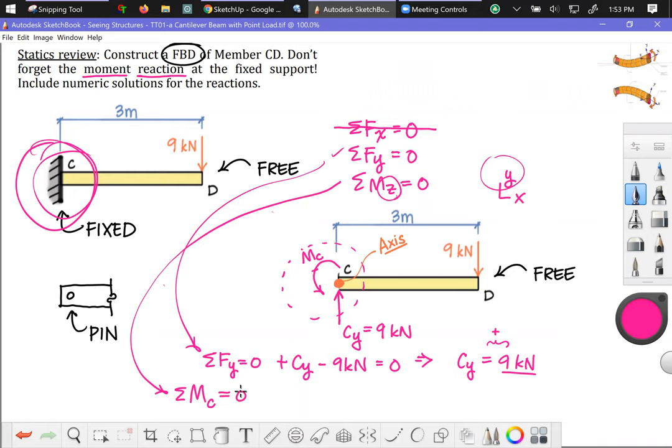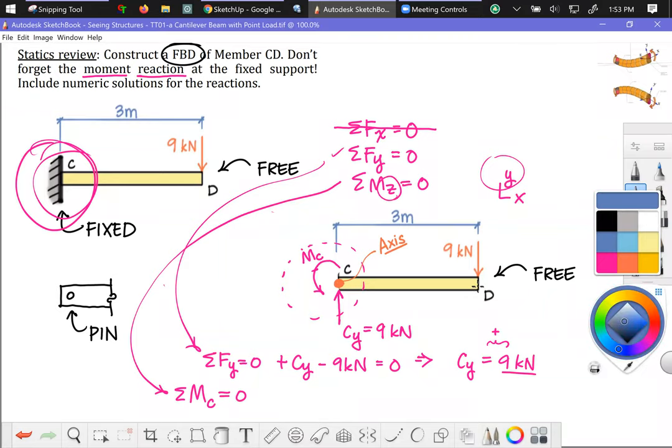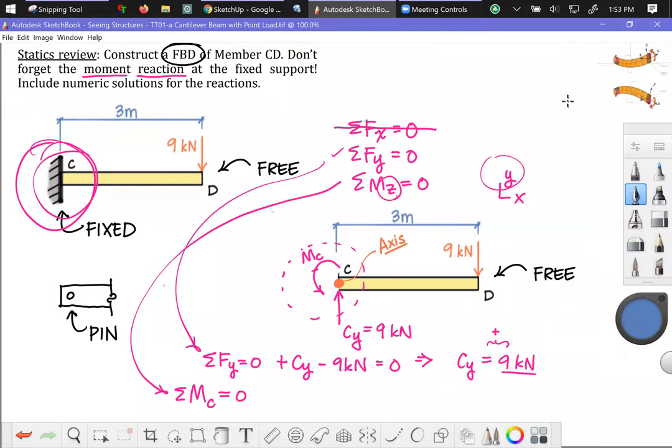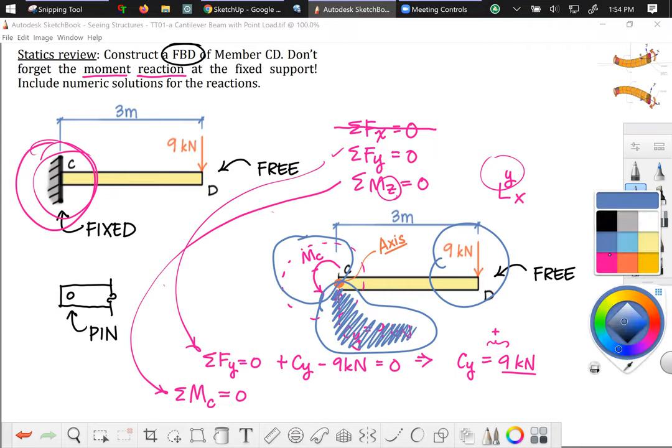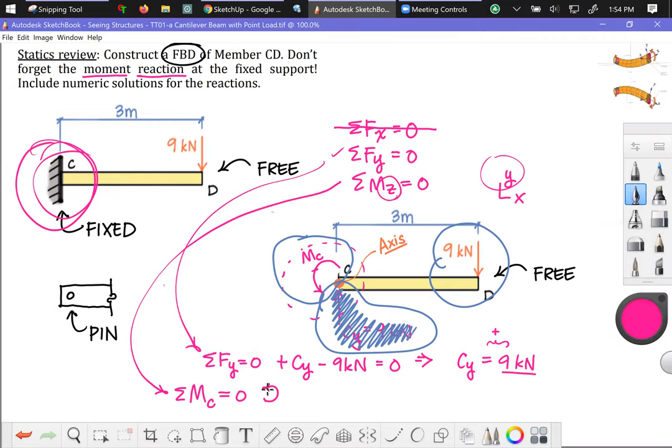And how many terms am I going to have in this? Well, I have got three things in my system. I have got a 9 kilonewton force here, I've got an equal and opposite 9 kilonewton reaction force here, and I have an unknown reacting moment there. Note that this 9 kilonewton force goes right through point C. It's coincident. Therefore, it doesn't have a moment arm. It is not going to be in play in our moment equilibrium equation. The other two terms are in play.